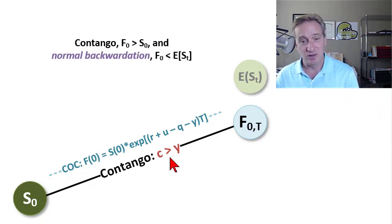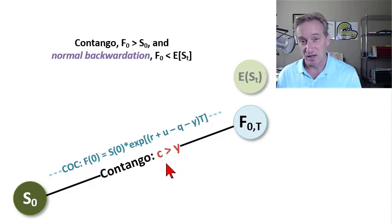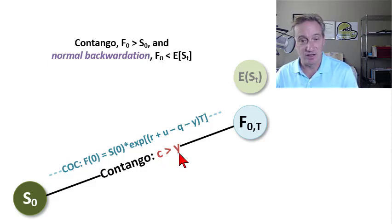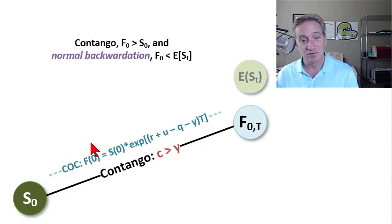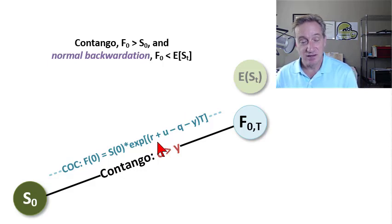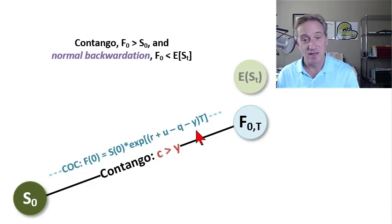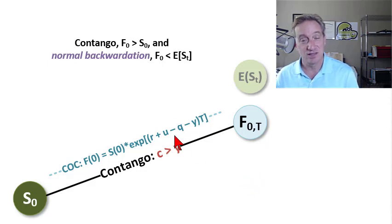There are at least two things we would say about a contango, or inferences that we would make when we observe the contango. The first one is that the cost of carry is greater than the convenience yield — C is cost of carry, Y denotes convenience yield. That's based on our cost of carry model, which gives us a formula for the theoretical futures price as a function of the spot price grown at the net cost of carry. The factors that are a burden of ownership would drive this up — risk-free rate and storage cost — and the benefits of ownership would pull this down: Q, a tangible income or dividend, and Y, the intangible convenience yield, which get subtracted.